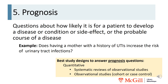Prognosis questions are about how likely it is for a patient to develop a disease, condition, or side effect, or the probable course of a disease. For example: does having a mother with a history of UTIs increase the risk of UTIs? The best designs to answer prognosis questions are quantitative, such as systematic reviews of observational studies or observational studies such as cohort or case control.